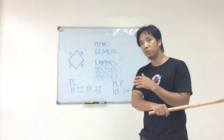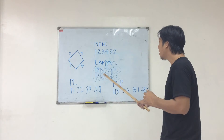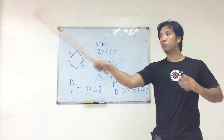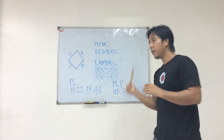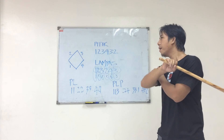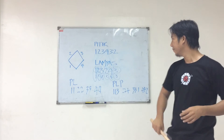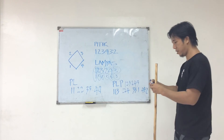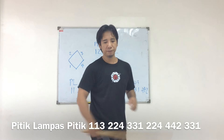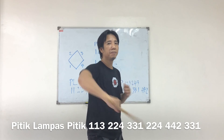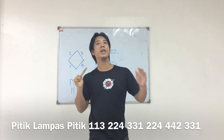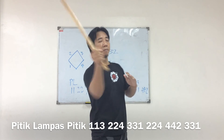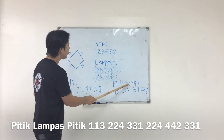We cannot do four four two from the closed position, so the sequence would be one two three two four three — we're going to do number two first: two two four, and then four four two, and then three three one. So the sequence for pitik lampas pitik is again one two three two four three. Let me show you again: pitik lampas pitik — this is how it's done: one two three two four three.